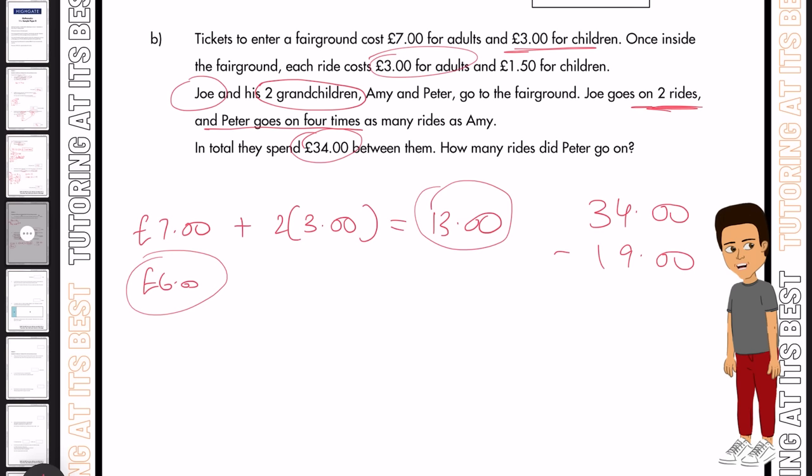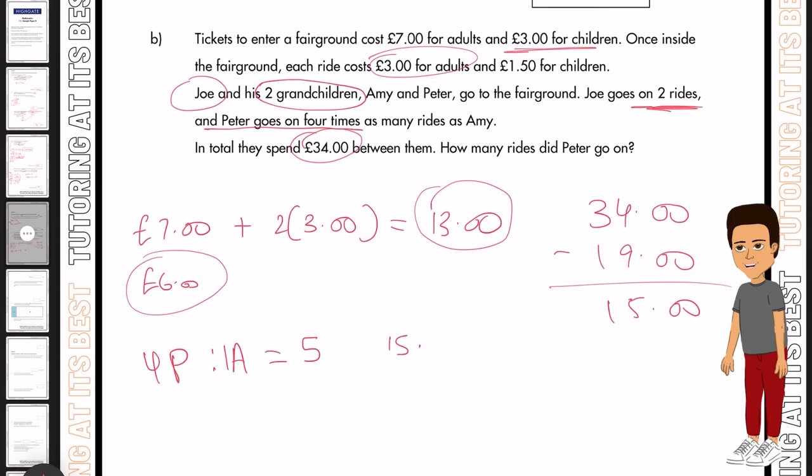So that means that the two grandchildren, Amy and Peter, spend £15 in total. But Peter has four, whilst Amy has one. So now, we can total that up as five in total, five parts. So 15 is the total amount, divide it by five, that gives us £3.